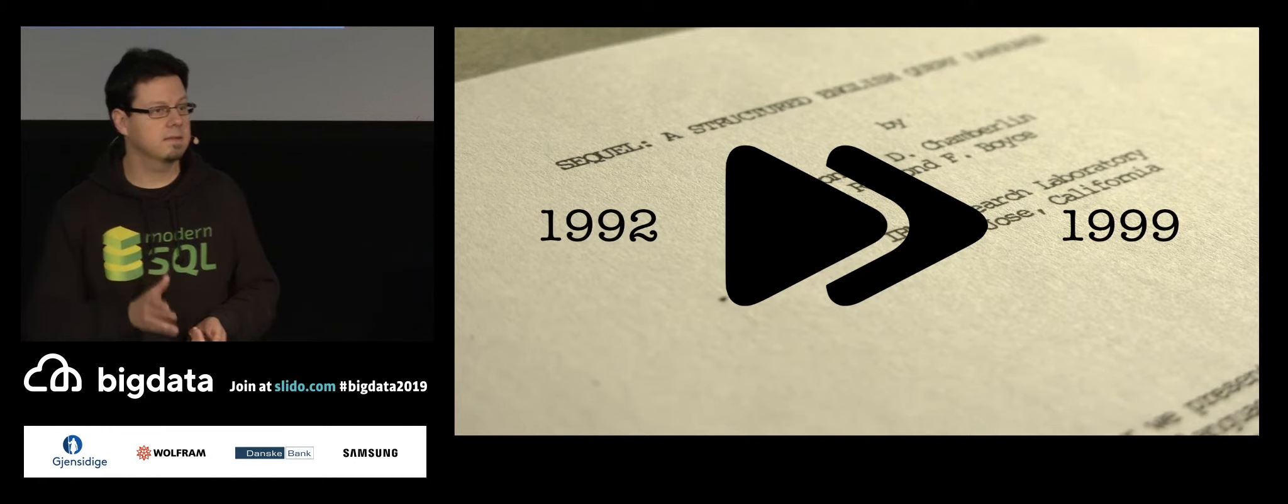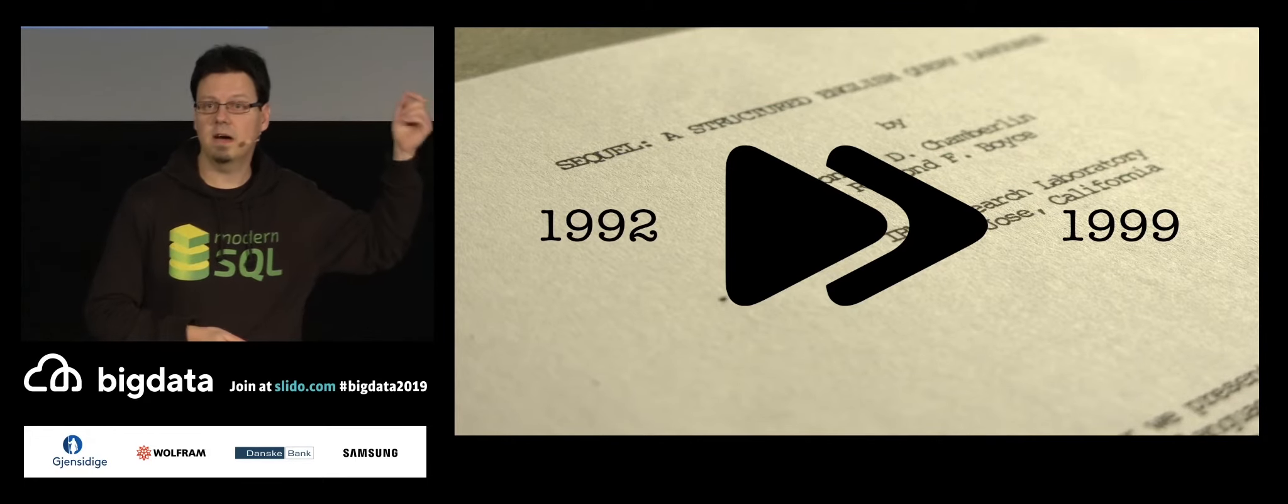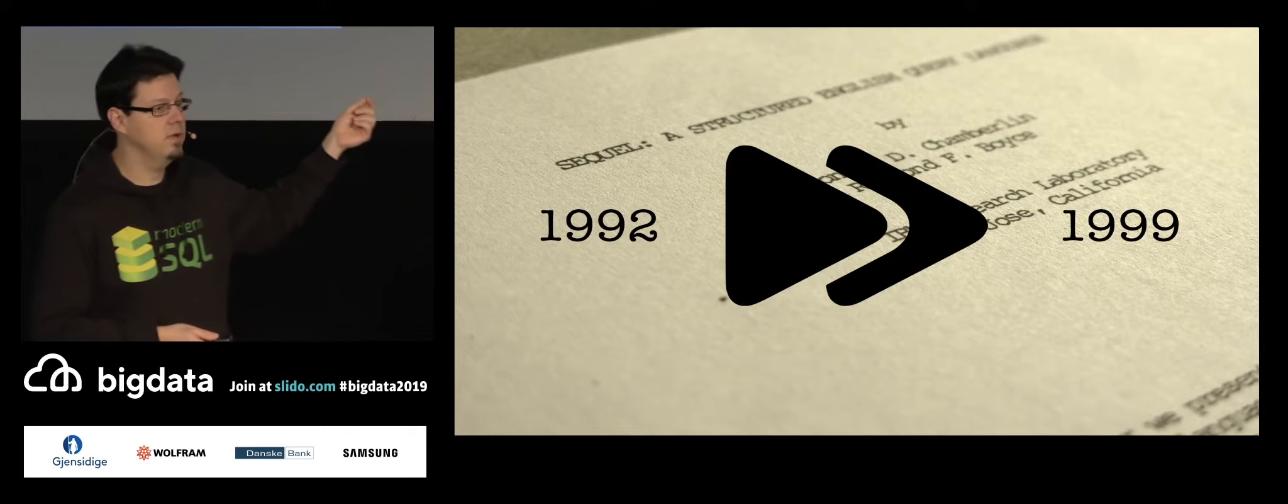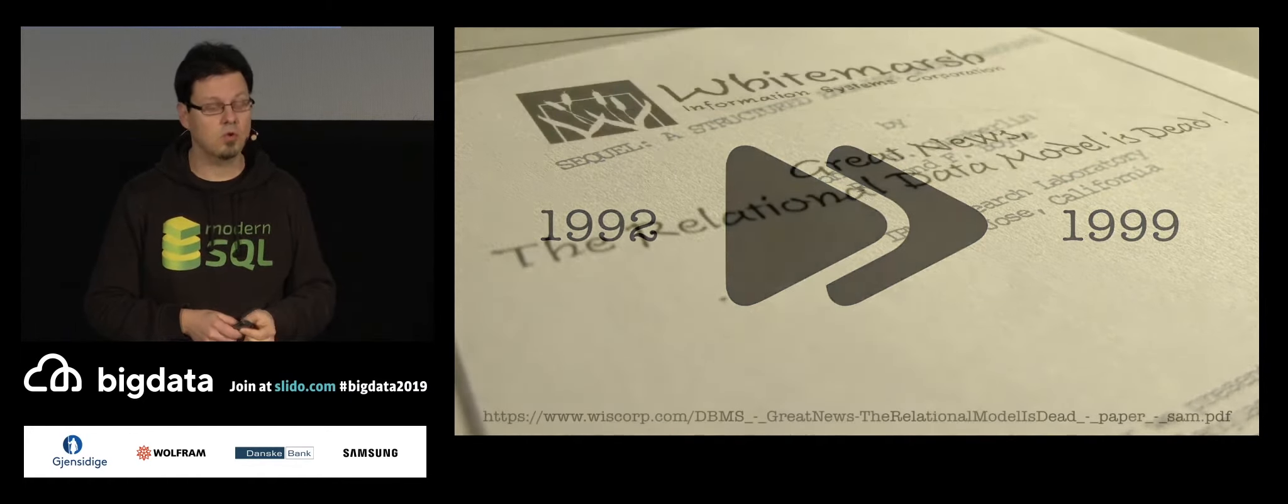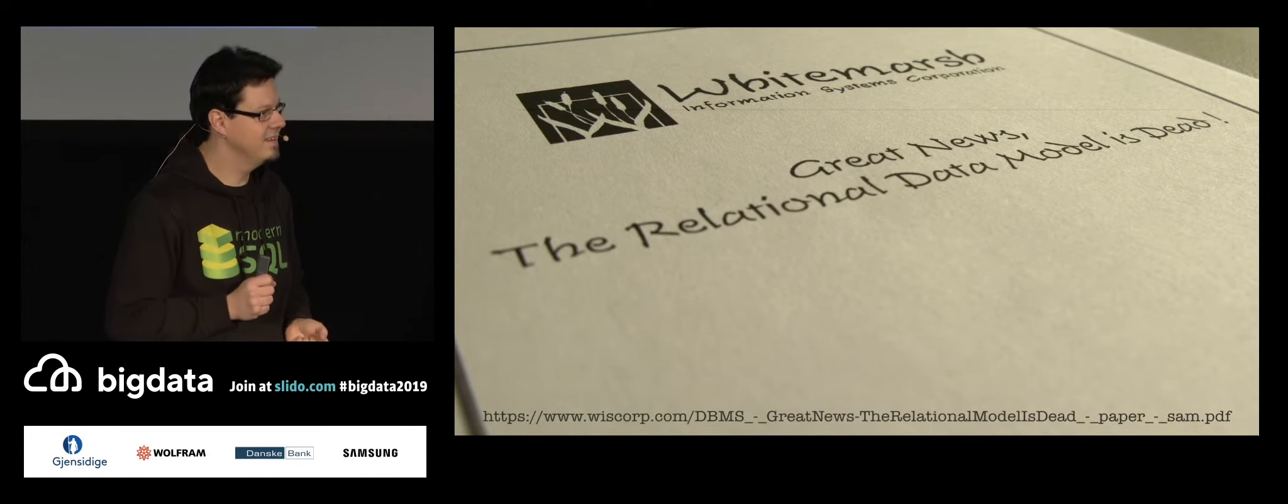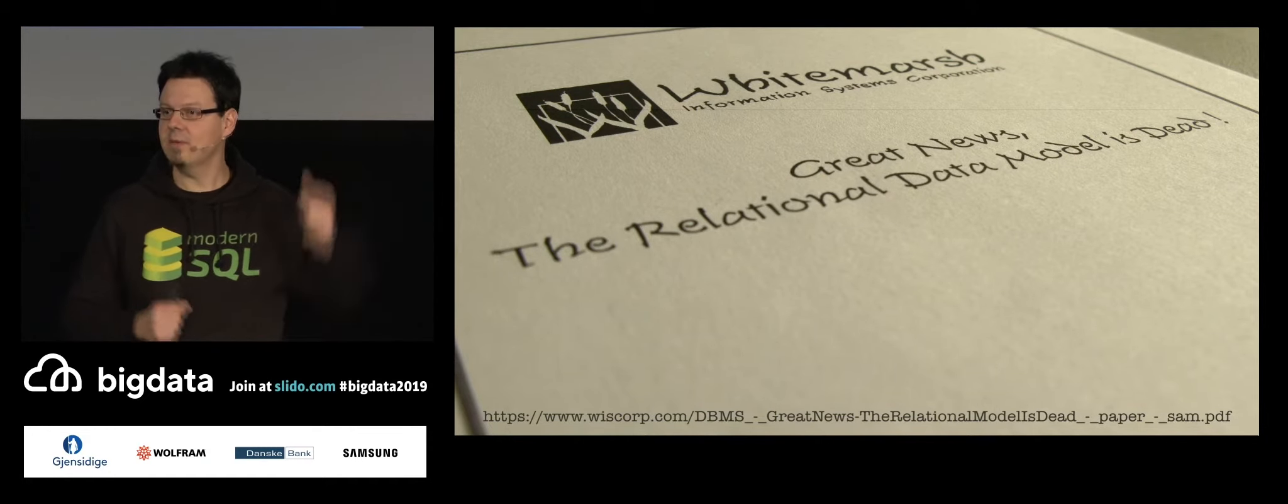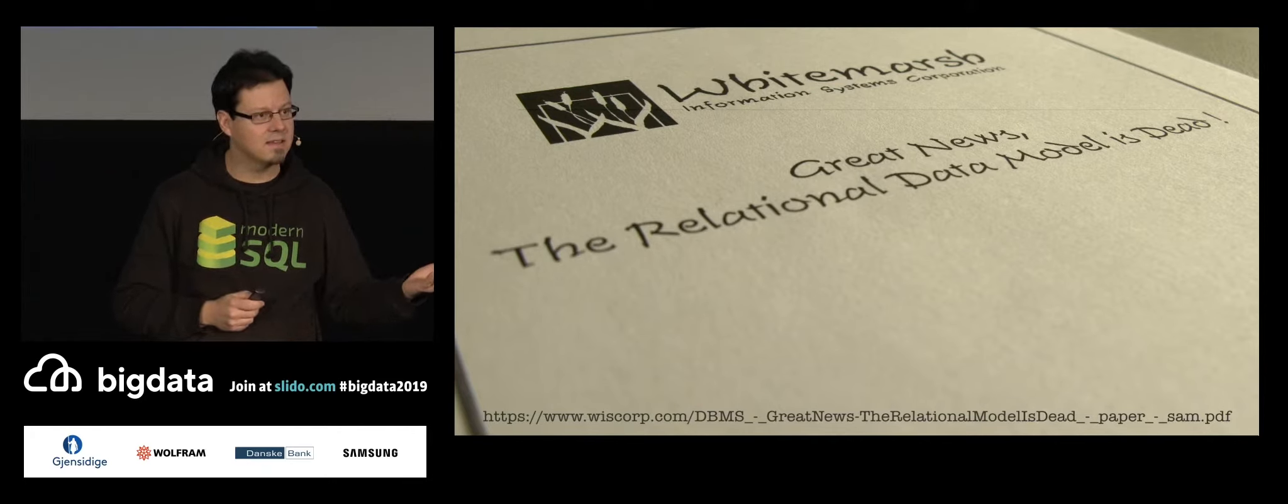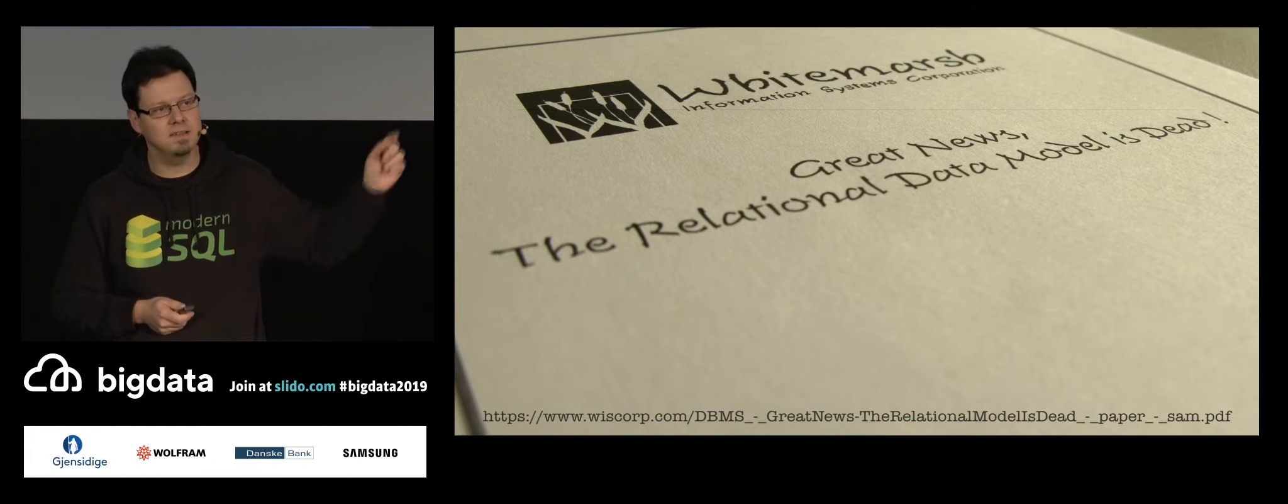And this has changed. This is the evolution I want to talk about. So the next standard release, I'm talking about an international standard here, it's an ISO standard, 9075 if somebody cares about the number. The next standard was released in 1999. And that starts with great news! The relational data model is dead. That was the actual title of a paper published around the time when this standard came out. So what does it say? It's dead. The relational data model is dead.